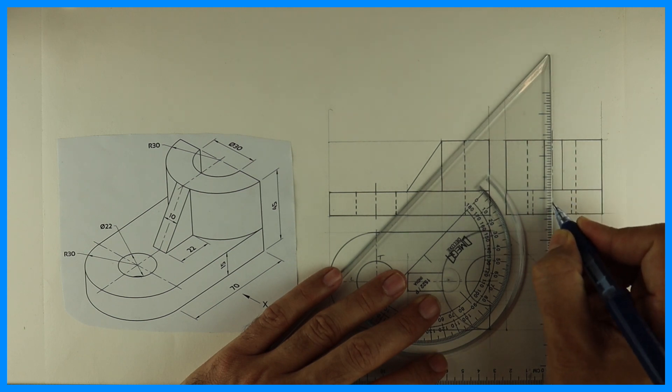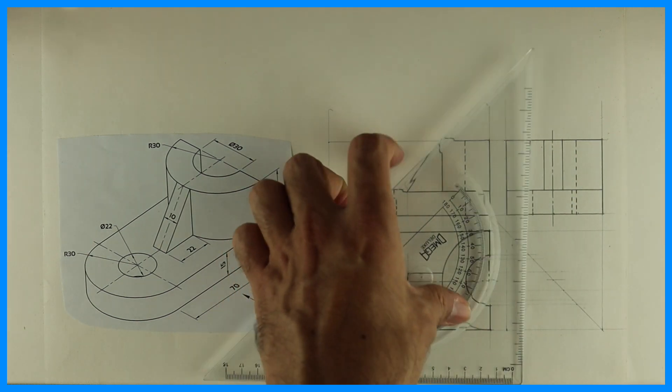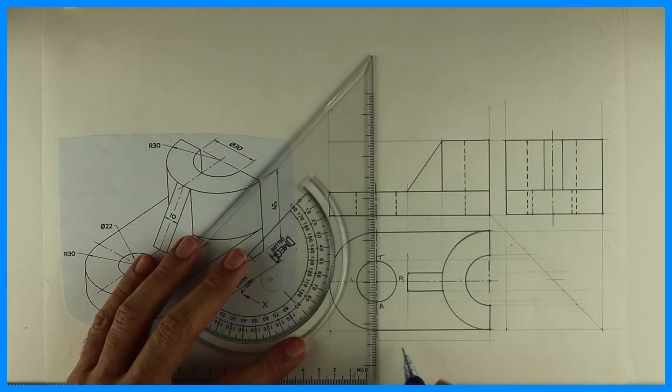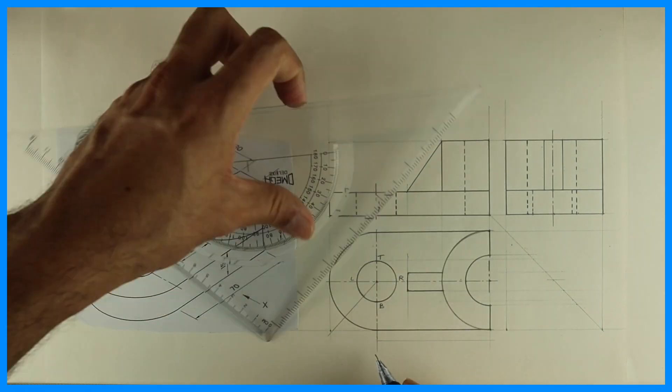We can draw a center line in side view. So we are done with this sum. We can do dimensioning and labeling. Thank you.